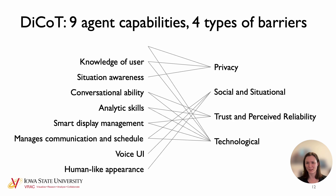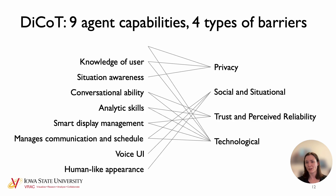When we looked at these capabilities and the relevant literature, we tried to classify why those capabilities don't exist in today's conversational agents. We grouped the constraints into four themes: privacy, social and situational constraints, trust and perceived reliability, and technological constraints. These categories are not unique to our research — similar themes come up in other research about barriers to adoption of new technologies.